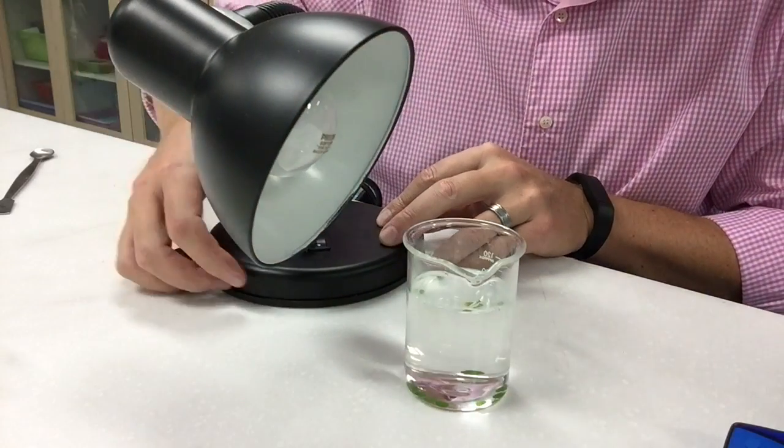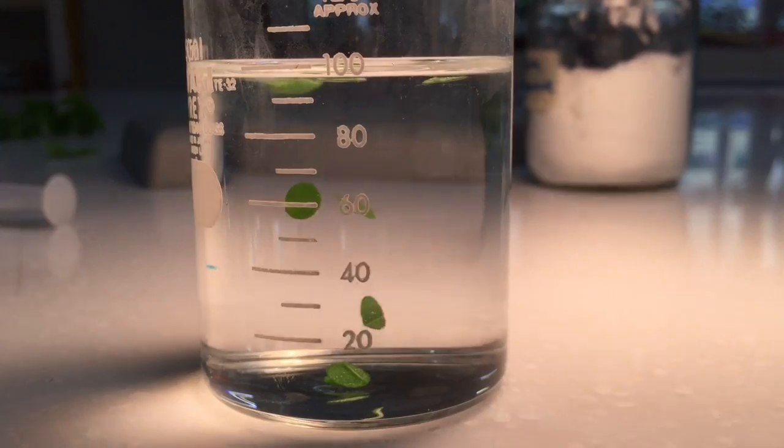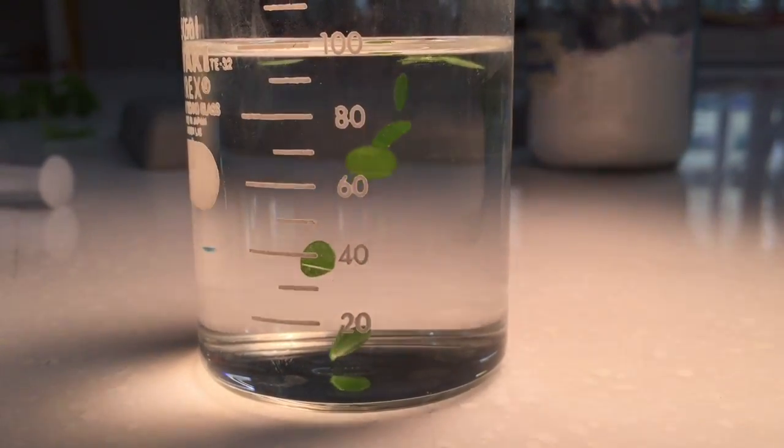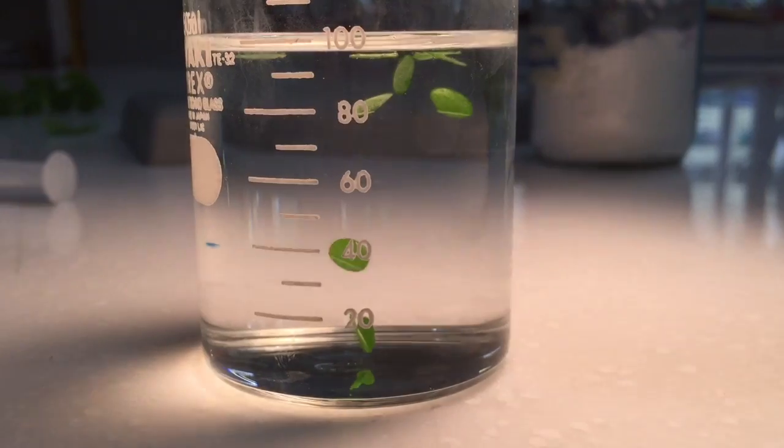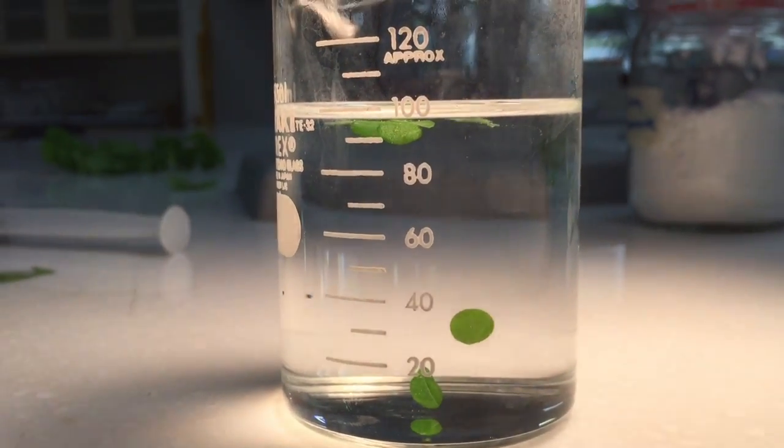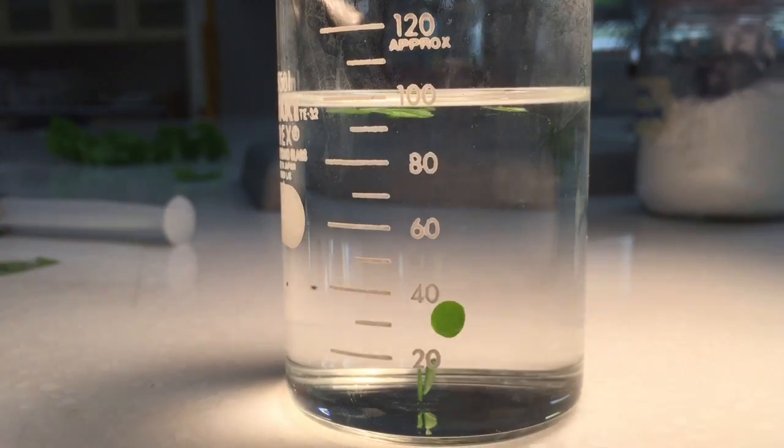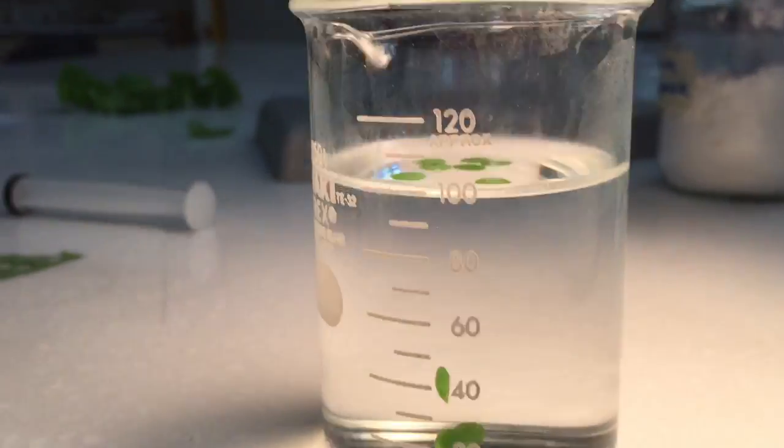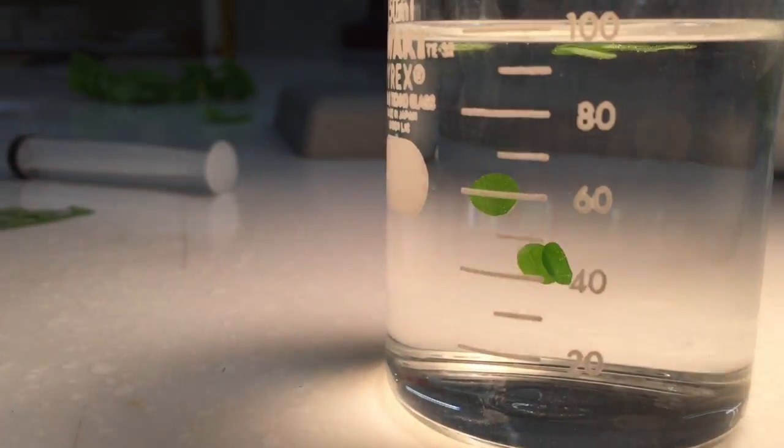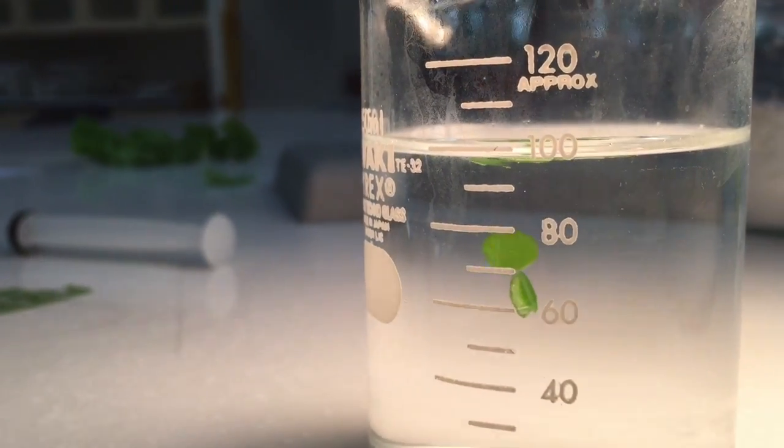So what I've got now is I've got the light shining on the leaf discs and I've actually swirled it up a little bit so that, you want to do that every once in a while, you can see that some of the leaf discs have already come up whereas other ones are still on their way up. So there you go that's kind of what you're looking for.